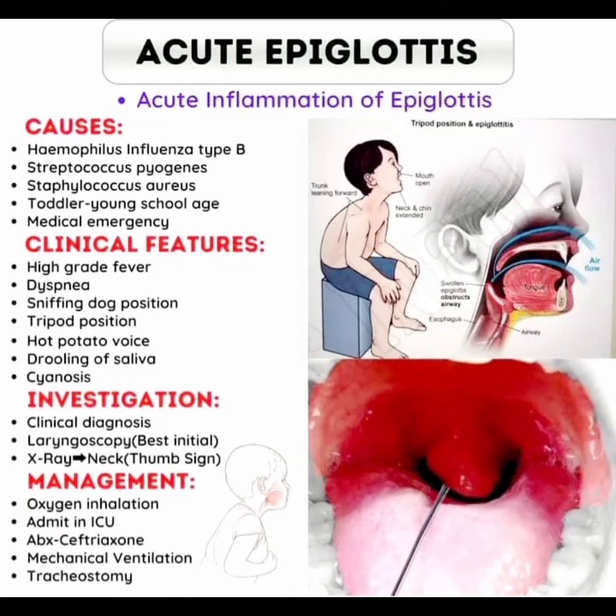Assalamu alaikum dear viewers. In this video I am discussing acute epiglottitis. Acute epiglottitis is caused by acute inflammation of the epiglottis. The causes include Haemophilus influenzae type B, Streptococcus pyogenes, and Staphylococcus aureus. It affects toddlers and young school-age children, and it is a medical emergency.